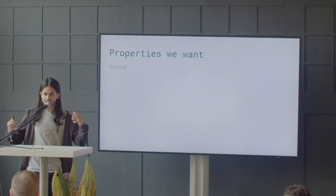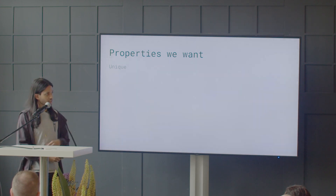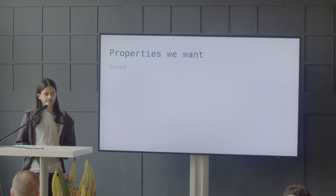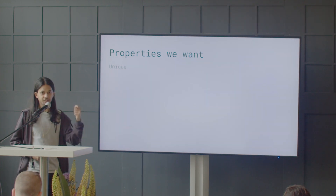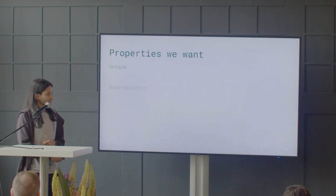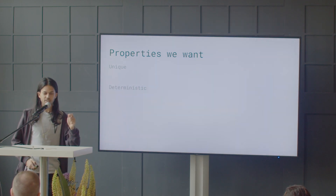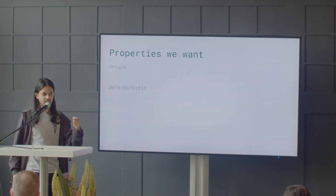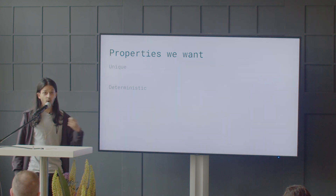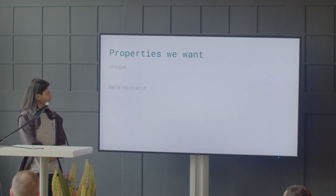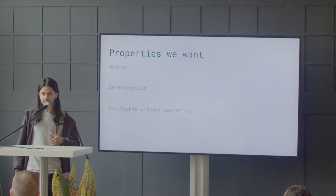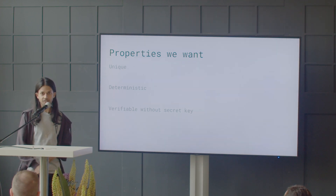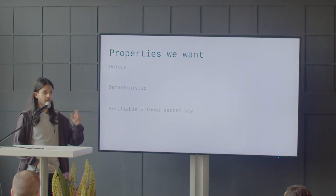Let's think about what exactly the signal we want — what the properties are. The first thing is we need it to be unique. If we have this kind of nullifier, we want to make sure that each person has a completely different value that they can input. At the same time, it has to be deterministic. If you want to prevent something like double voting or double claiming, it has to be the case that each person can only generate one such identity or nullifier.